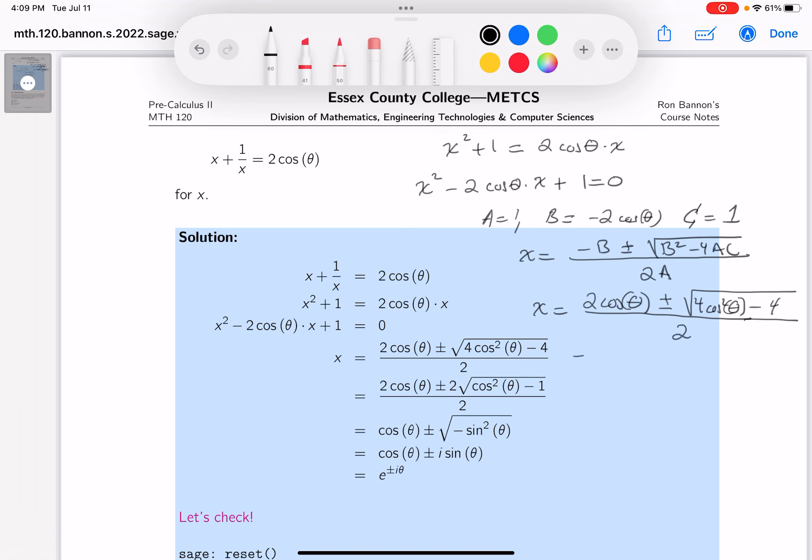Let's simplify. Actually, you solve for x at this point. We've already done that. So you get 2 cosine theta. Let's see, plus or minus. I'm going to factor the 4 out. The square root of 4 is 2. Then you're left off with cosine squared theta minus 1 over 2. I'm going to divide through by 2. You get cosine theta plus or minus the root of cosine squared theta minus 1.